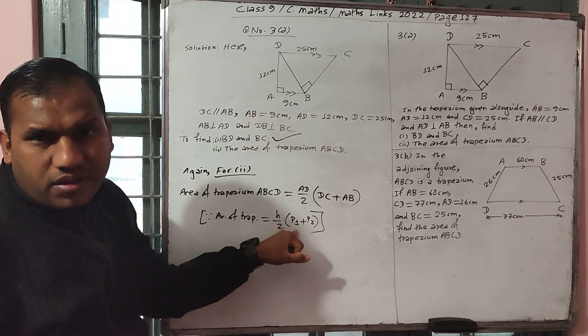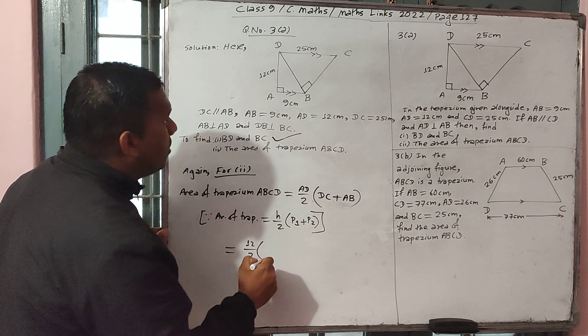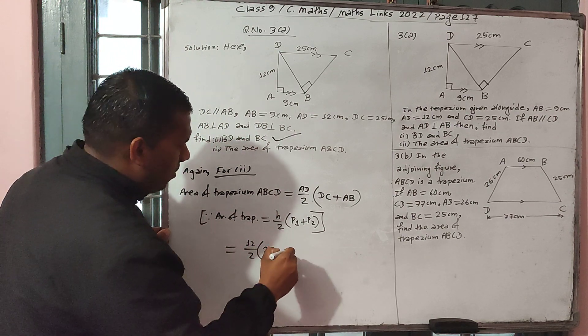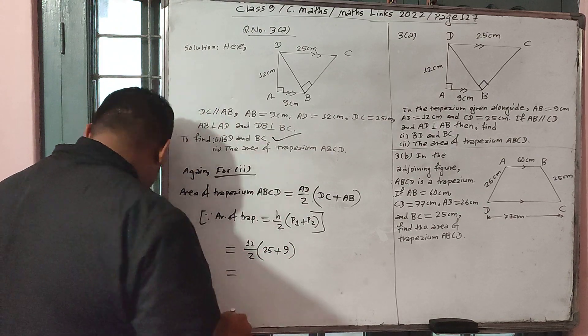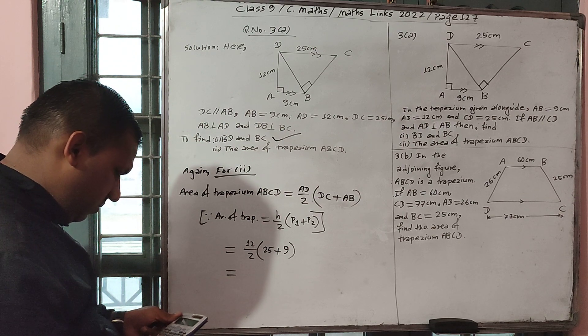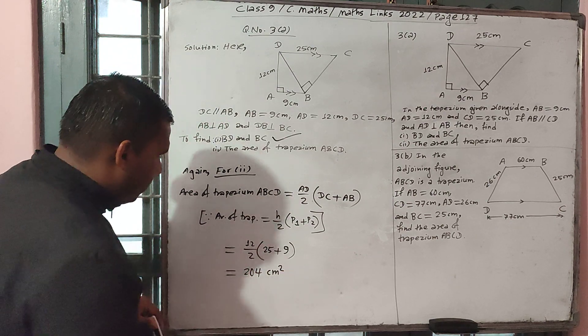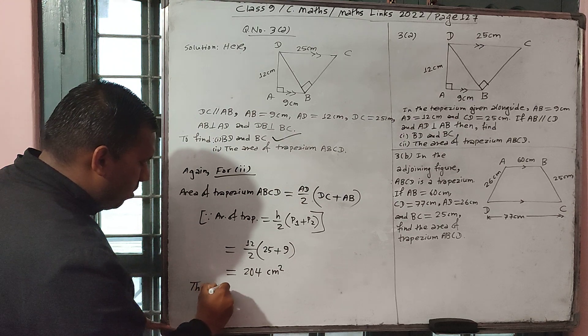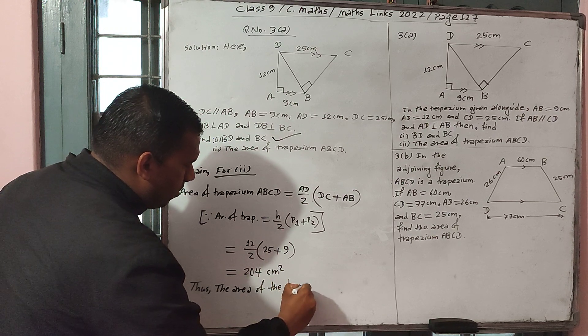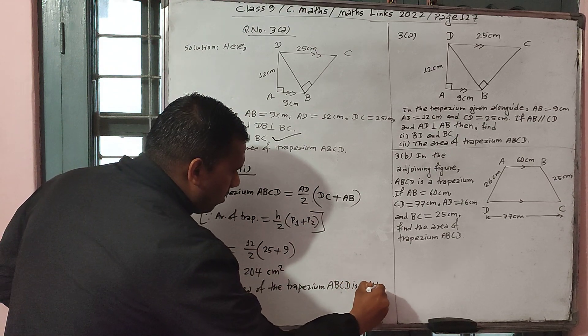Height equal to sum of parallel sides. AD is 12, DC is 25, and AB is 9. Now it becomes 204 square centimeter. The area of the trapezium is 204 square centimeter.